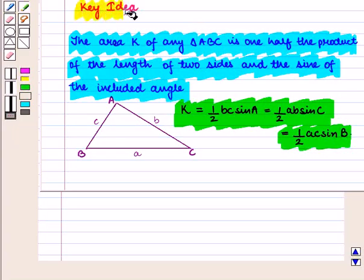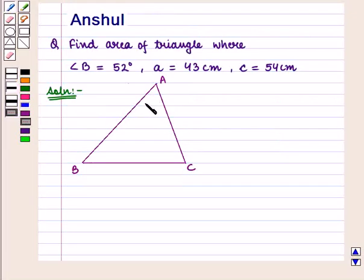With this key idea, we shall proceed to the solution. We are given a triangle ABC where angle B is equal to 52 degrees